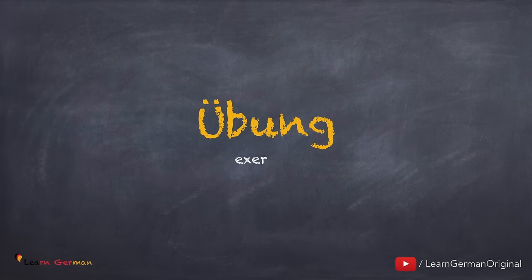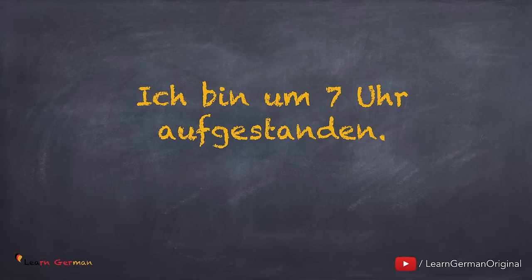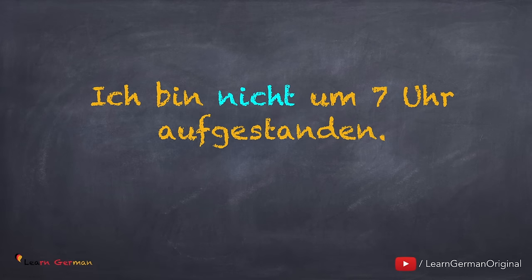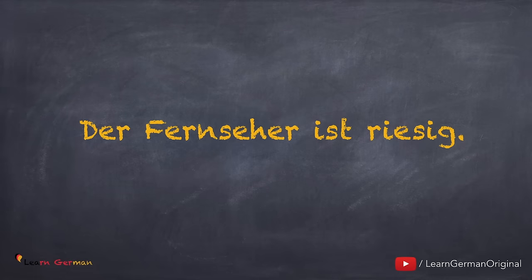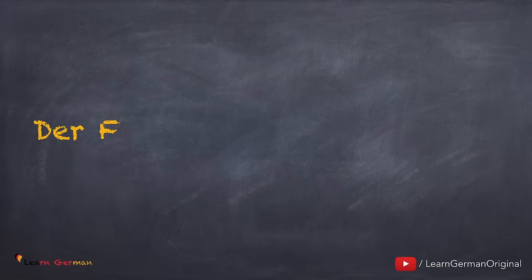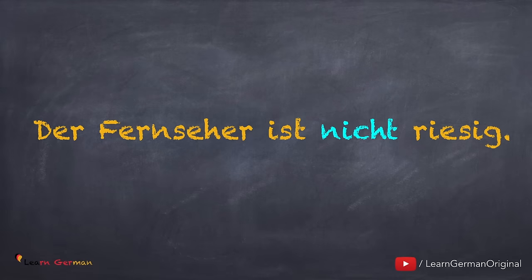Und jetzt machen wir eine Übung. Negiere den ganzen Satz — wo steht 'nicht'? Hier ist der erste Satz: Ich bin um 7 Uhr aufgestanden. Und die Antwort ist: Ich bin nicht um 7 Uhr aufgestanden. Weil hier eine Präposition ist, steht 'nicht' vor der Präposition. Wir kommen jetzt zum zweiten Satz: Der Fernseher ist riesig. Hier ist der negative Satz: Der Fernseher ist nicht riesig. Wie schon gelernt, 'nicht' steht vor dem Adjektiv.